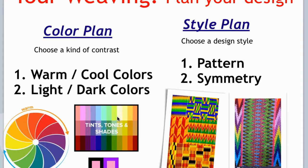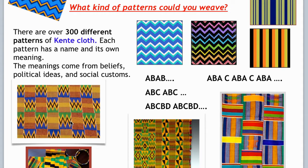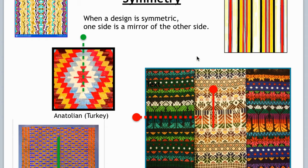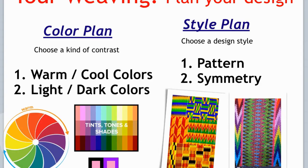Think about your color plan — warm and cool — and a style plan for the decoration or the design. You could have just stripes with different patterns, like an ABC, ABC, ABC type of pattern. You could create basically any pattern you would like, or you could also do the shapes. And here's a little reminder about symmetry: symmetry is when you could divide it in half and it would be the same on both sides. There's going to be more about how to build the weaving next week, but for this week, you're going to want to design the color plan and the pattern, symmetry, or what style you're going to do.